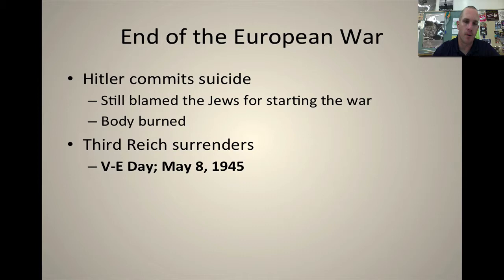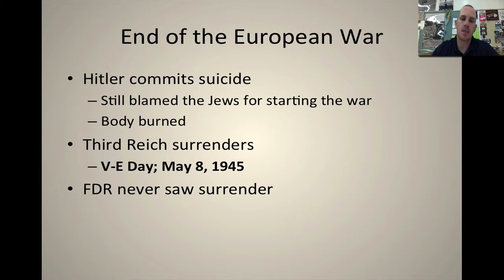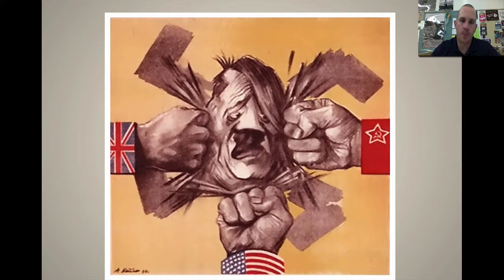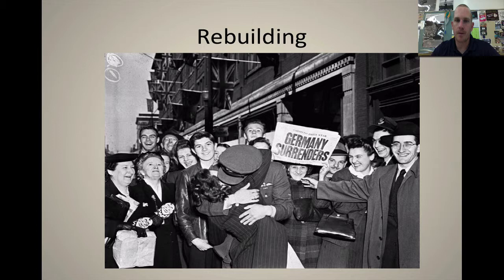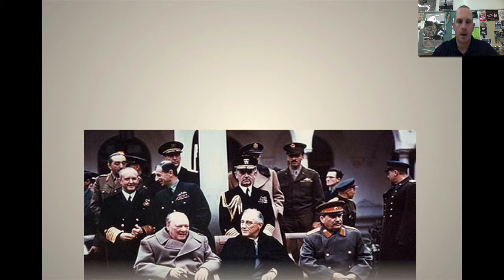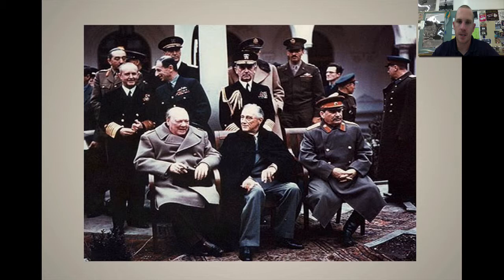Once the Third Reich surrenders in May 1945, it is known as VE Day — Victory in Europe Day. Unfortunately for FDR, he was elected to his fourth term, aided largely by the successes of D-Day, but he never sees the end of this war. He has a stroke and dies while taking a family portrait in Georgia. Harry Truman takes over. This political cartoon shows the British, Americans, and Soviets from each side squeezing Hitler and the Third Reich out of Europe. In the Yalta photo, you can see FDR does not look well at all — he has aged significantly since taking office in 1932.